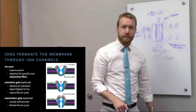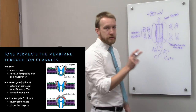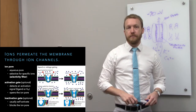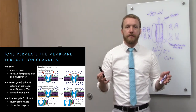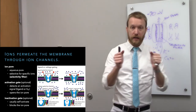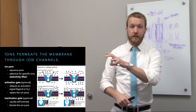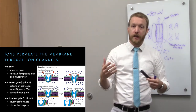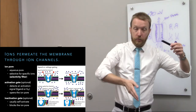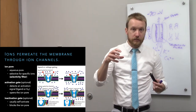Beyond the pore and selectivity filter, there are two optional gate components. The activation gate is exactly what it sounds like — it opens up the pore to let ions move. It can be opened by ligand binding, such as a neurotransmitter causing a structural change that pulls the activation gate out of the way. That's how a neurotransmitter receptor works: a chemical signal causes the ion channel to open.